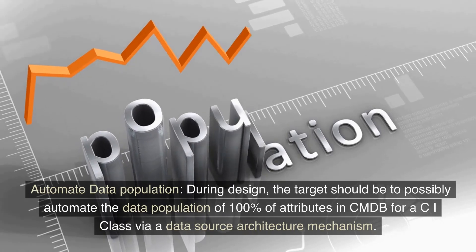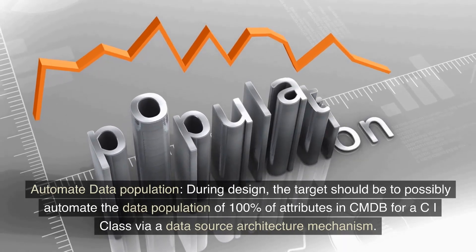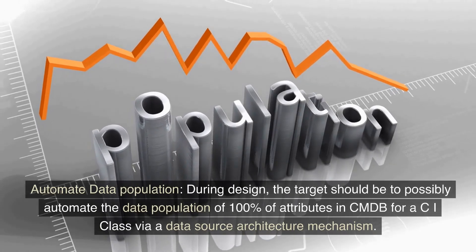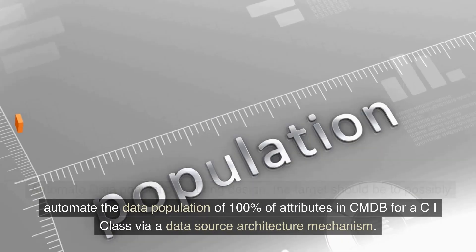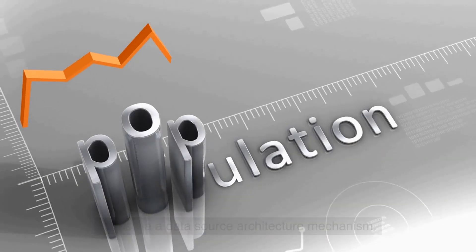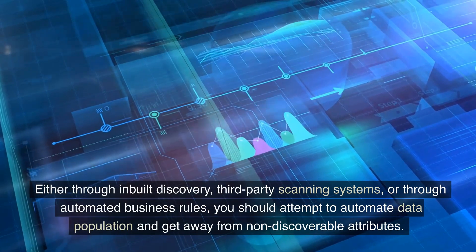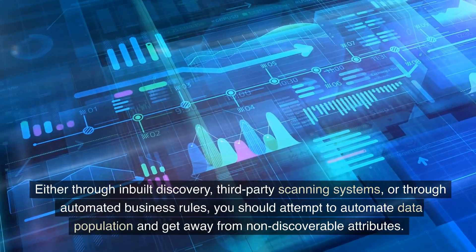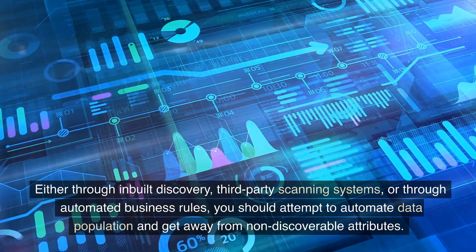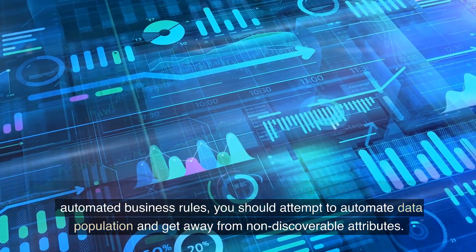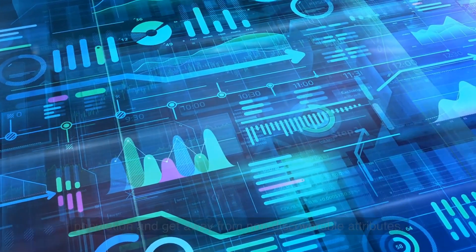Automate data population. During design, the target should be to possibly automate the data population of 100% of attributes in CMDB for a CI class via a data source architecture mechanism. Either through inbuilt discovery, third-party scanning systems, or through automated business rules, you should attempt to automate data population and get away from non-discoverable attributes.